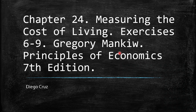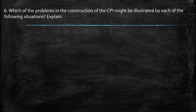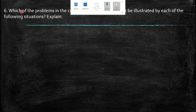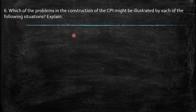Hi, welcome to this video. We're going to develop exercises 6 to 9 of chapter 24, measuring the cost of living. This is a book by Gregory Mankiw, Principles of Economics. Question 6 asks: which of the problems in the construction of the CPI might be illustrated by each of the following situations? Explain.